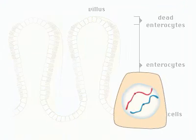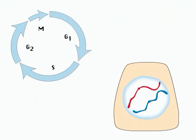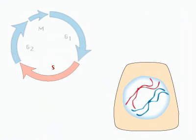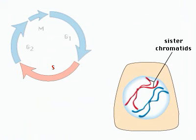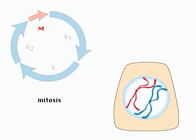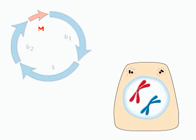The actively dividing stem cell proceeds through a sequence of phases called the cell cycle. During the synthesis, or S phase, the cell's DNA is duplicated. After a G2 transition period, the cell enters the mitotic, or M phase. Mitosis partitions the genome equally to opposite ends of the cell, and the cell divides into two.